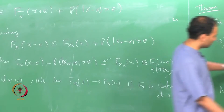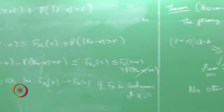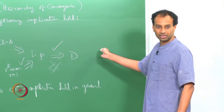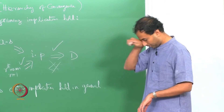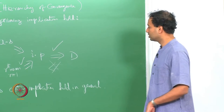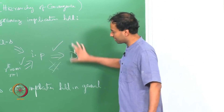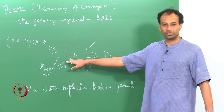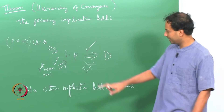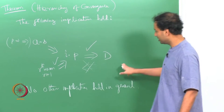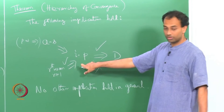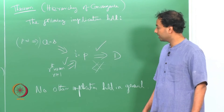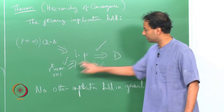By the way, convergence in distribution is called weak convergence because it sits at the weak end of the implication — it is the weakest notion of convergence. We have proven this implication, given a counter-example for the reverse, and noted that when the limit is constant the converse holds.